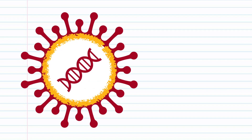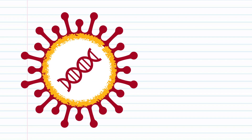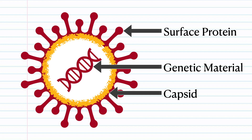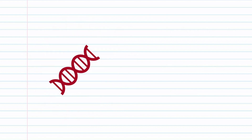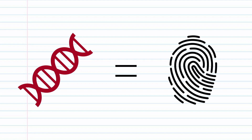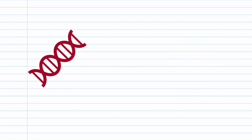The first thing we need to understand is the structure of a virus. A virus usually comprises three parts: a capsid, which is a hard outer coating on the virus; genetic material, usually comprised of DNA or RNA; and surface proteins on the capsid. The genetic material, or RNA, is like a barcode or a fingerprint, and is different and unique for every single virus.